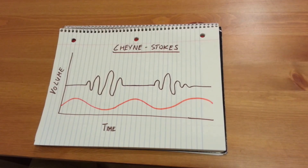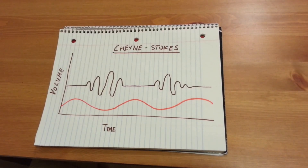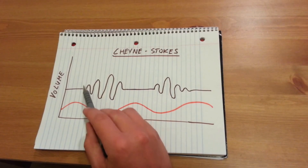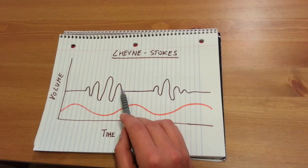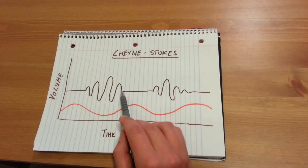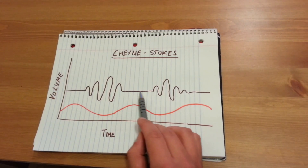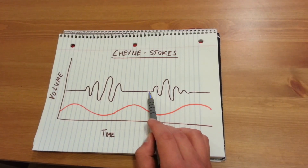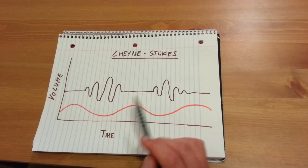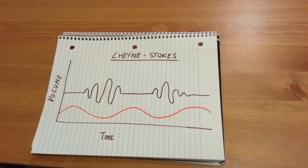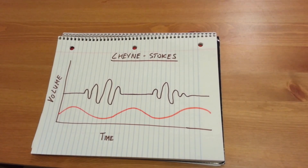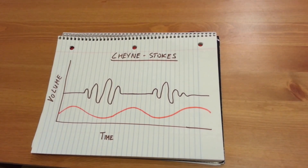Cheyne-Stokes respirations are an abnormal pattern of crescendo and diminuendo breathing, followed by temporary periods of apnea, or total lack of respiration. This pattern of breathing can be described as oscillatory or cyclical.